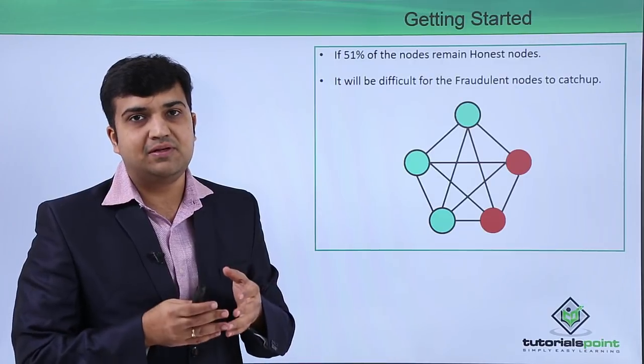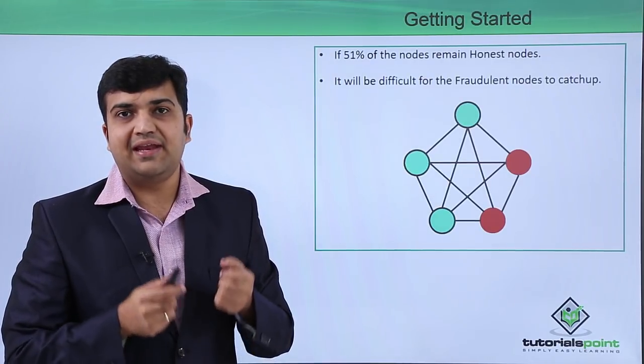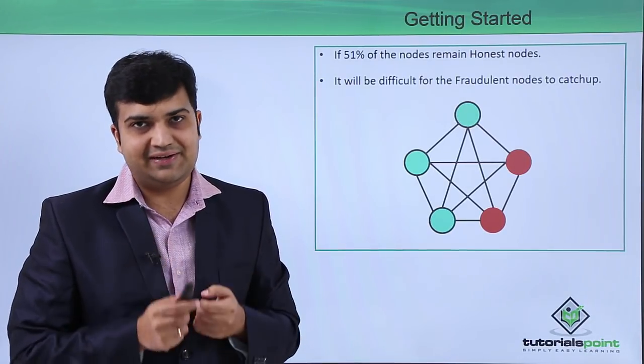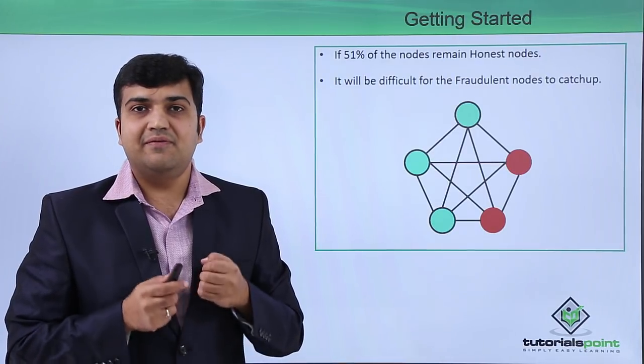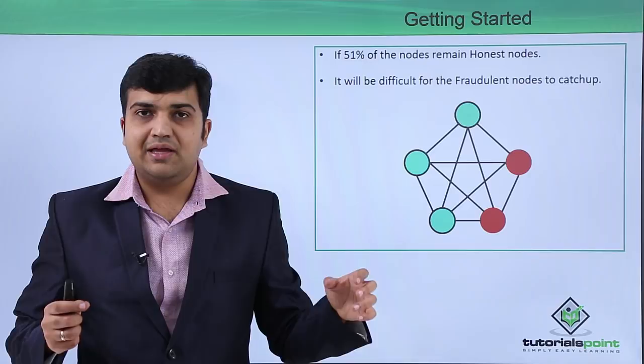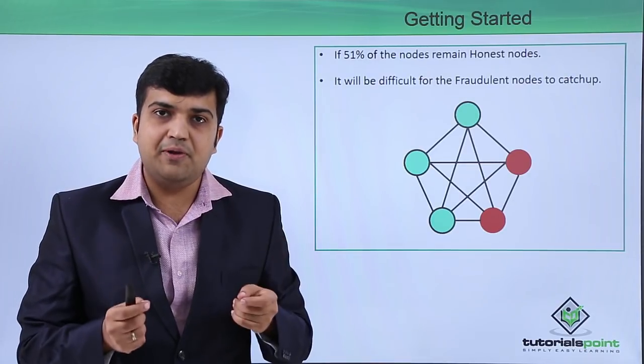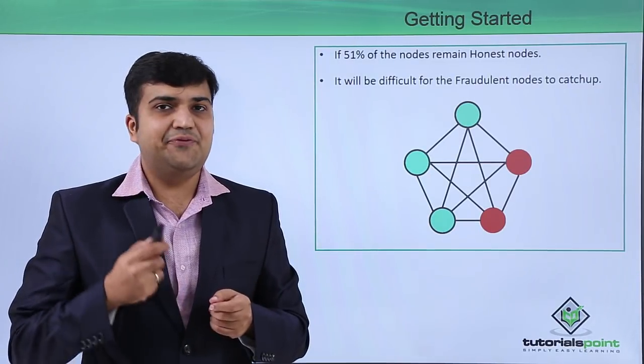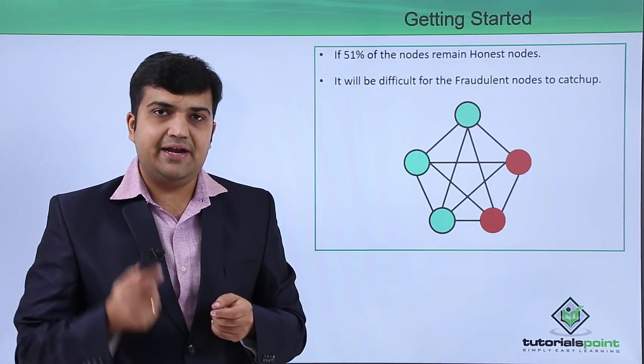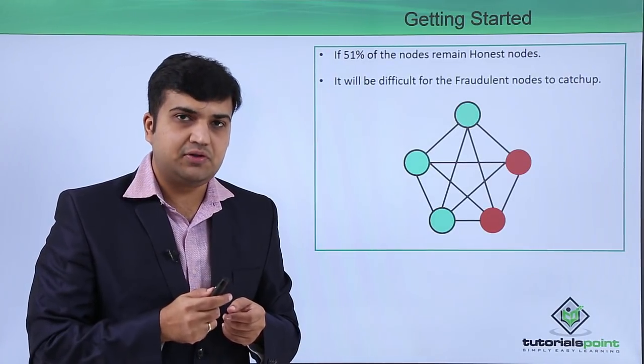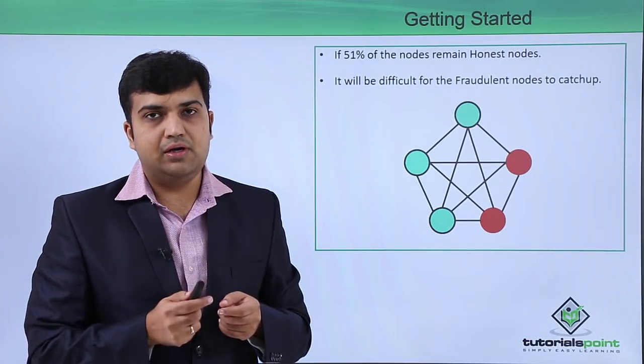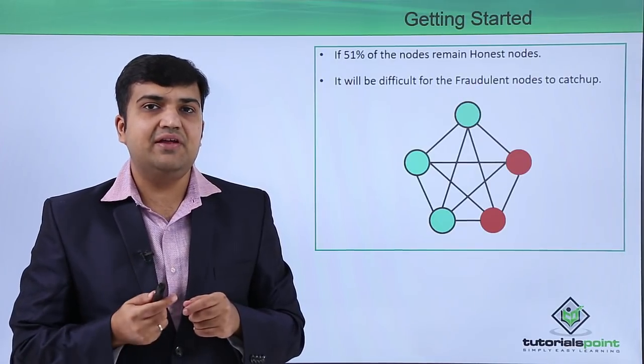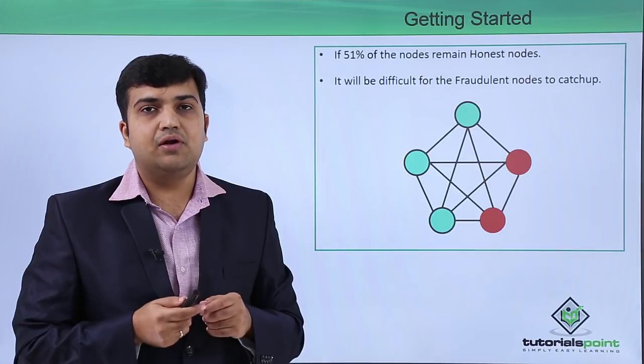This is possible when most of the nodes in the network have the valid copy of the blockchain containing valid transaction entries. That is possible when the majority of the nodes agree to a common copy of the blockchain, and that copy is valid. For example, all the nodes in the network which have the correct copy of blockchain with correct transaction data are called honest nodes, and the ones under the influence of attackers which have the wrong copy are called fraudulent nodes.